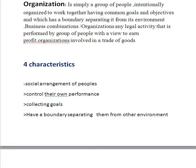By looking at the social arrangements, someone working alone cannot be classed as an organization. Organizations are structured to allow people to work together towards a common goal. Usually the larger the organization, the more formal the structure. The next characteristic is that they control their own performance.